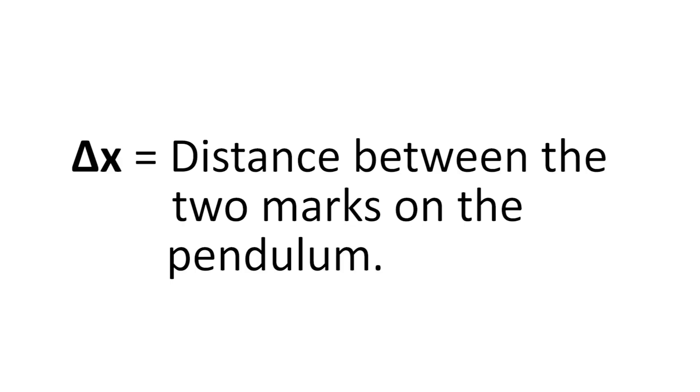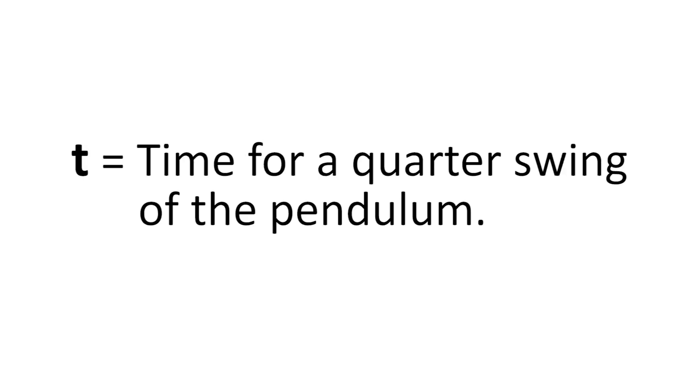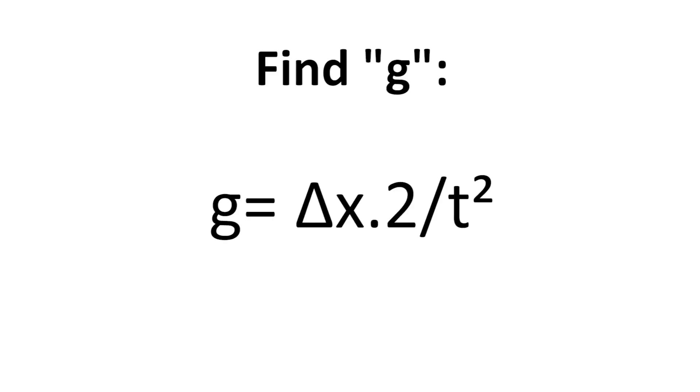Delta x, the displacement, is the distance between the two marks on the pendulum and t is the time for a quarter of a swing of the pendulum. All you have to do is find g.